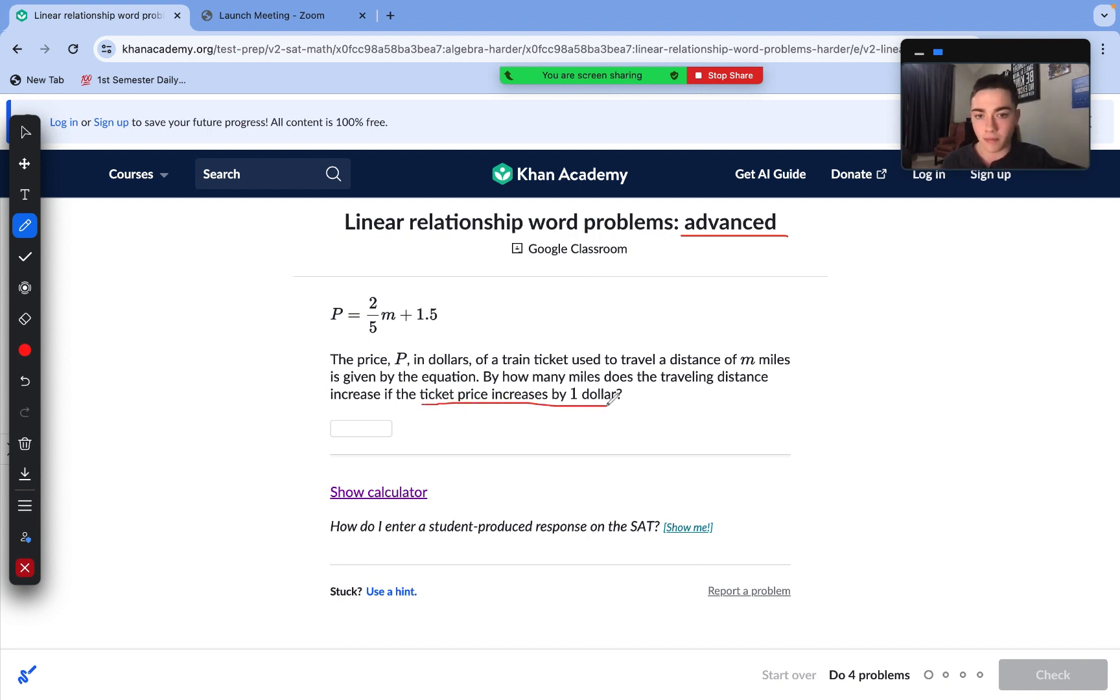So let's take a look here. Ticket price is increasing by one dollar and we need to see how many miles that affects. So we have price here and we have distance as our M variable. So we need to understand that the ticket price is what's going to be increasing by one dollar, so our P variable needs to increase by one dollar. So how I would do this, I would calculate M if P equals 2 and then calculate M if P equals 3. That way we get that increase of 1 and we get to see what happens to our M value.